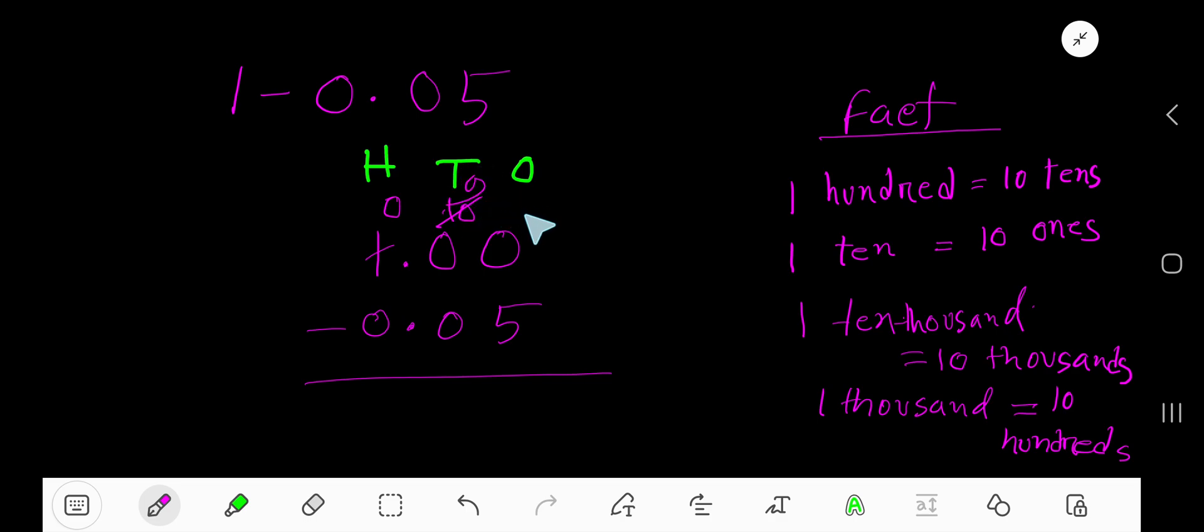Now take five ones from ten ones - you will have five ones. And if you take zero tens from nine tens, you will have nine tens. Bring down this decimal, and zero minus zero. Zero point nine five - this is your result.